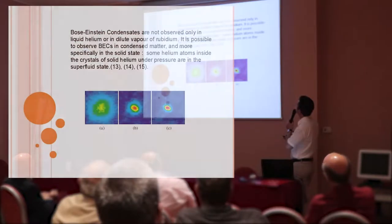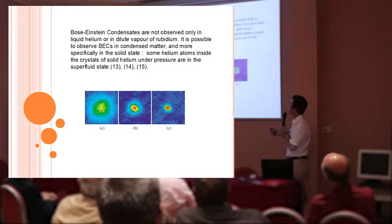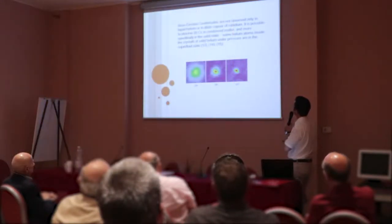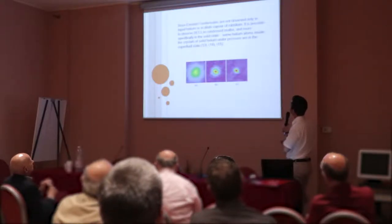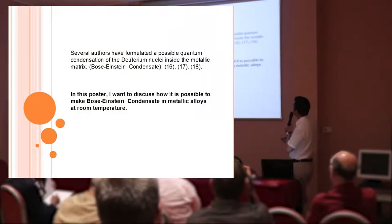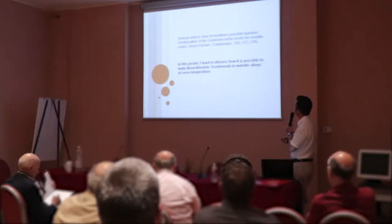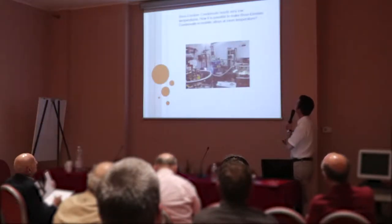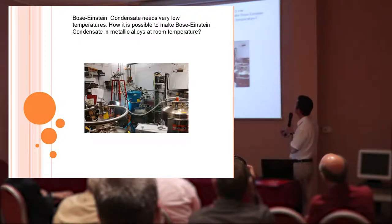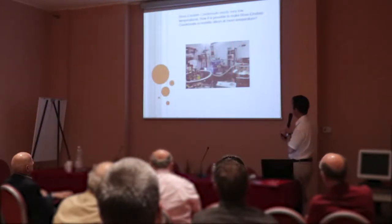Bose-Einstein condensates are not observed only in liquid helium or dilute vapor of rubidium. It is possible to observe BEC in condensed matter, more specifically in the solid state. Some helium atoms inside the crystal of solid helium under pressure are in the superfluid state. In this poster, I want to discuss how it is possible to make Bose-Einstein condensate in metallic alloy at room temperature, because that's the main problem. Bose-Einstein condensate needs very low temperature, like this cryostat.